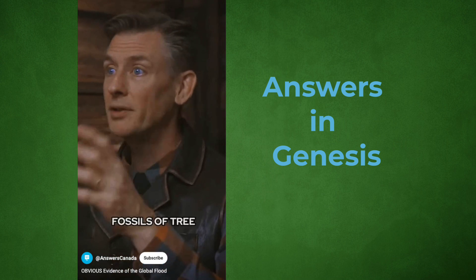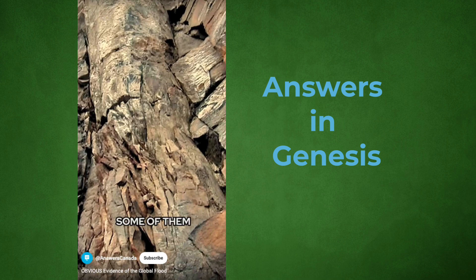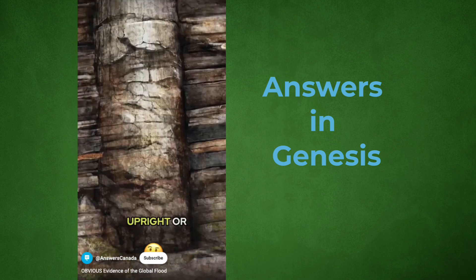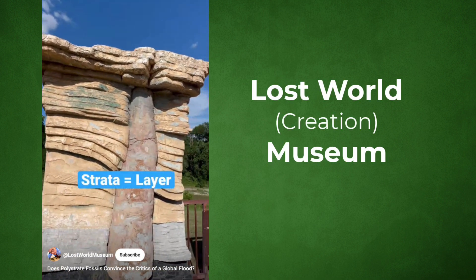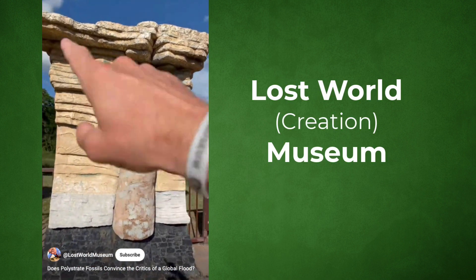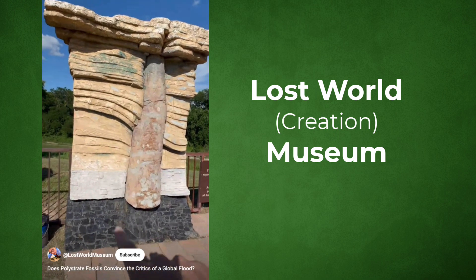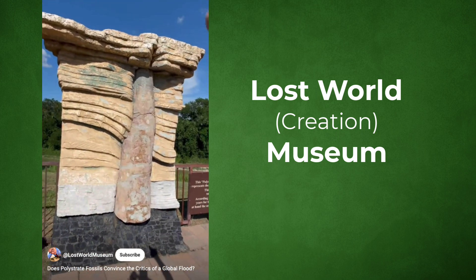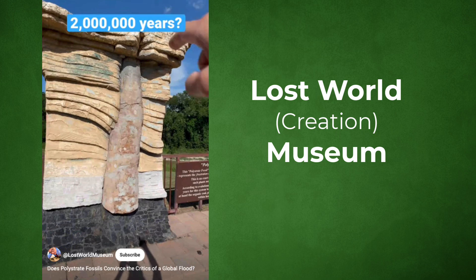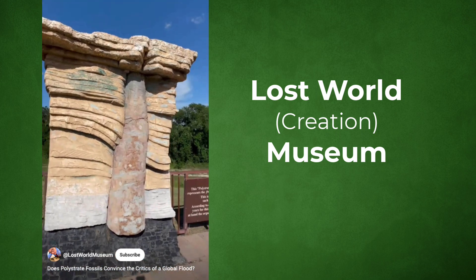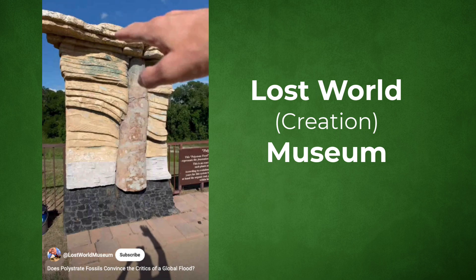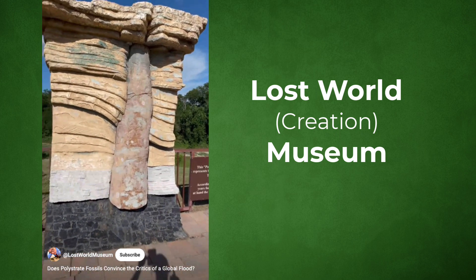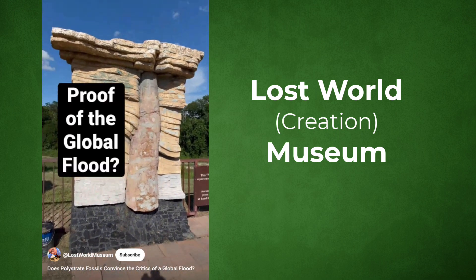Another obvious evidence that makes sense in a global flood is fossils of tree trunks, some of them 30 feet tall, standing upright. This right here is an exact replica that was done of a polystrate fossil. Scientists would say that the strata here is about two million years old, but that can't be, because that can't remain intact while that's taking place. So this deposition took place rapidly, and that is another proof of a worldwide flood and a young earth.